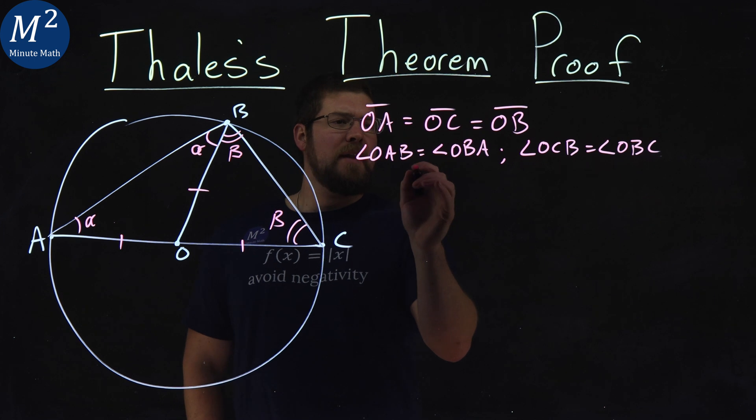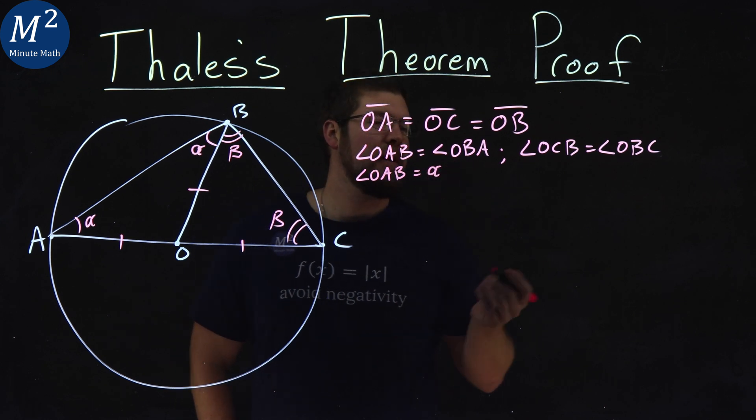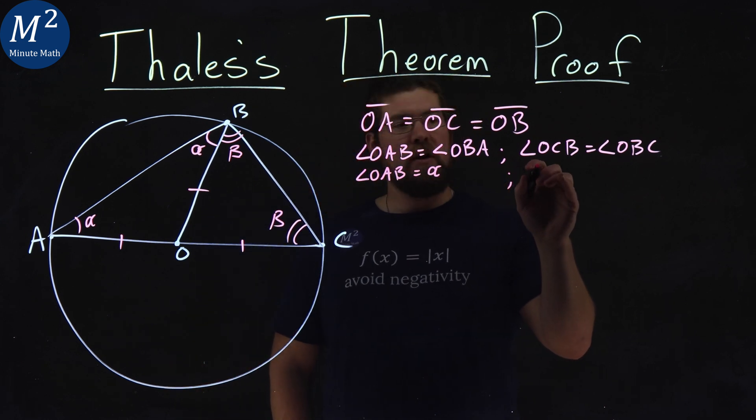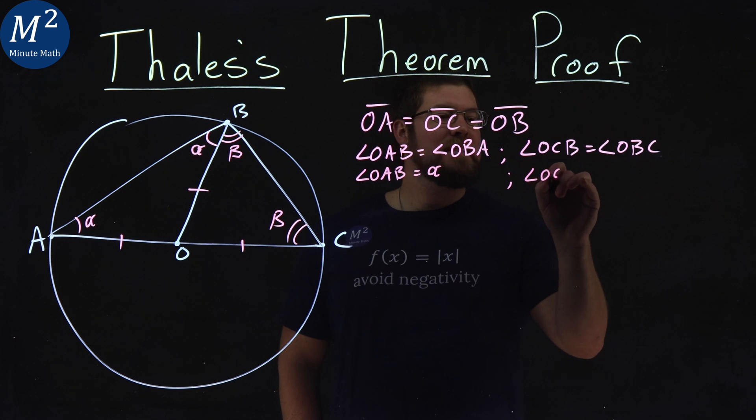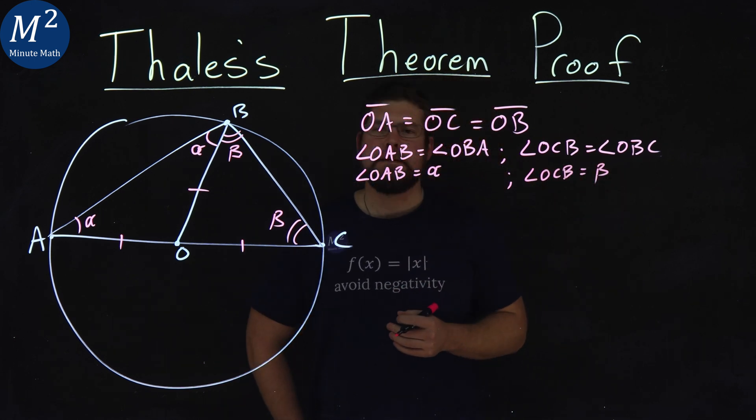So let's kind of make that here. I'm going to label that angle OAB is equal to alpha. And the same thing here, I'm going to say OCB is equal to beta when I reference it here.